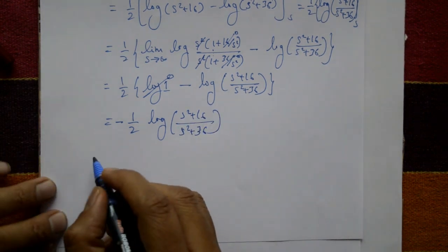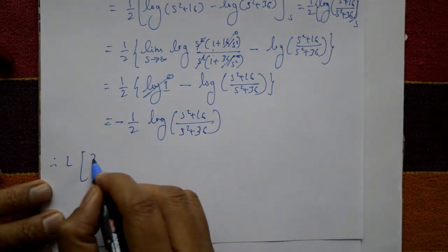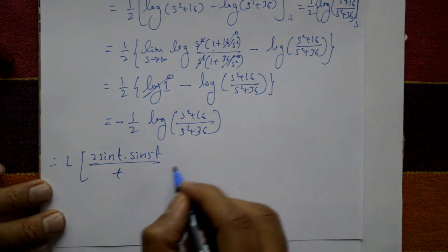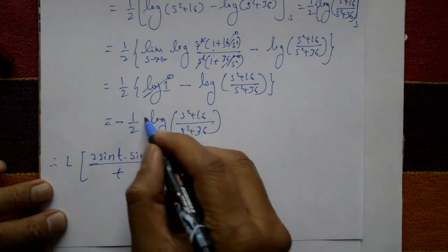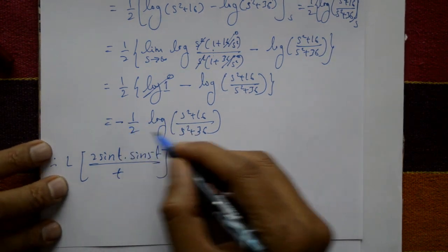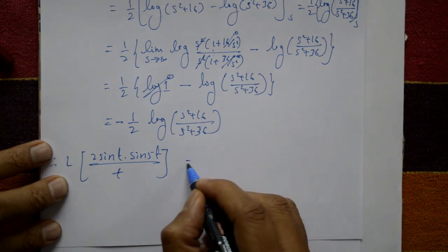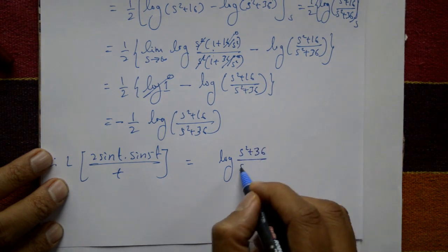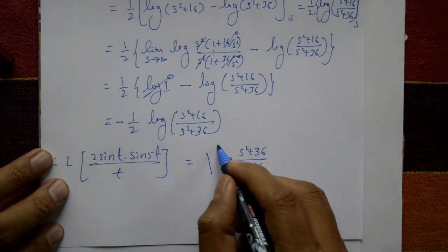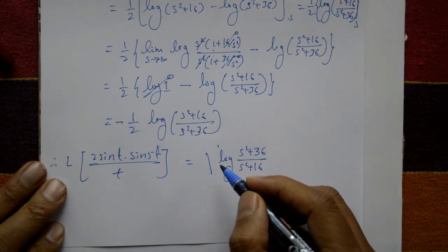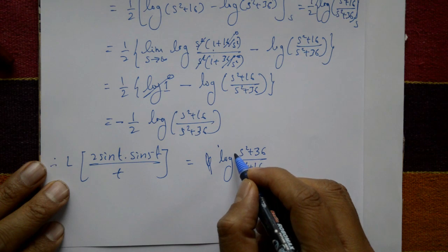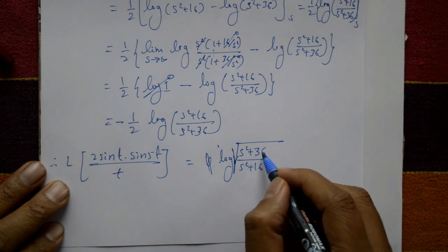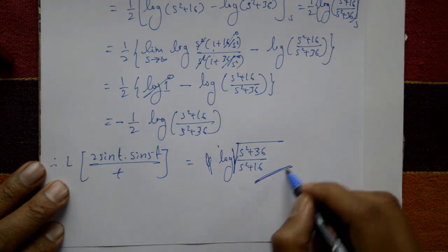Therefore, the Laplace of 2 sin(t) sin(5t) divided by t equals one-half times [0 minus log((s² plus 16)/(s² plus 36))], which after interchanging numerator and denominator becomes one-half times log[(s² plus 36)/(s² plus 16)], or equivalently log of the square root of (s² plus 36) over (s² plus 16). This is the required solution.